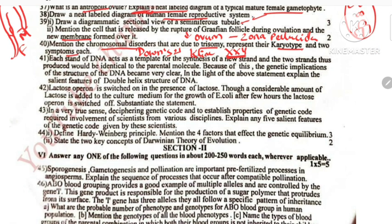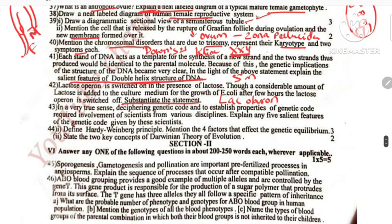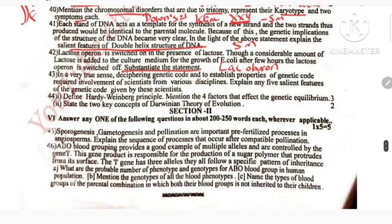DNA — salient features of double helix — 5 marks. Next, lac operon question — 5 marks. Salient features of DNA — 5 marks — this is the question. Disorder — 5 marks. The question is genetic code — salient features — very easy — 5 marks. Any 4 points are the answer — direct question.